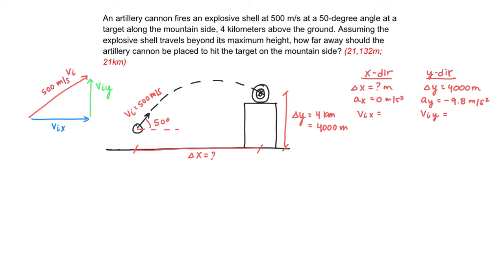So, that means that my VIX is going to be 500 cosine 50 degrees, and that means that my VIY is going to be 500 sine 50 degrees. And so I'll add that to my table back on the right.